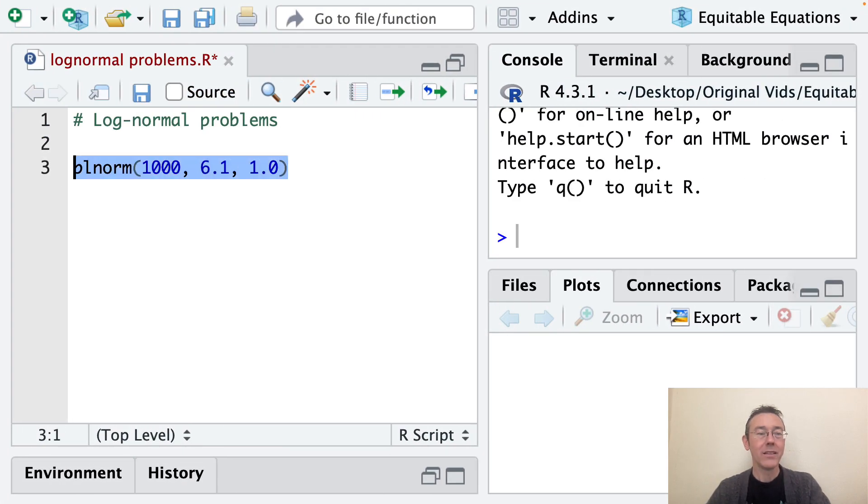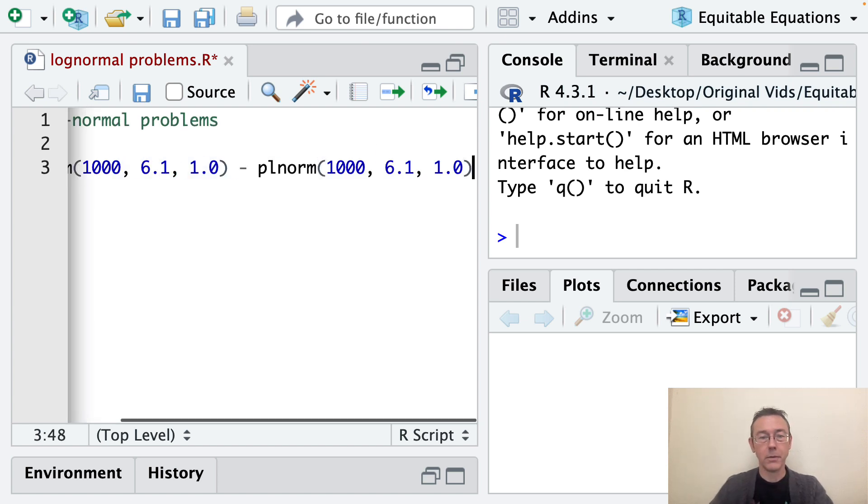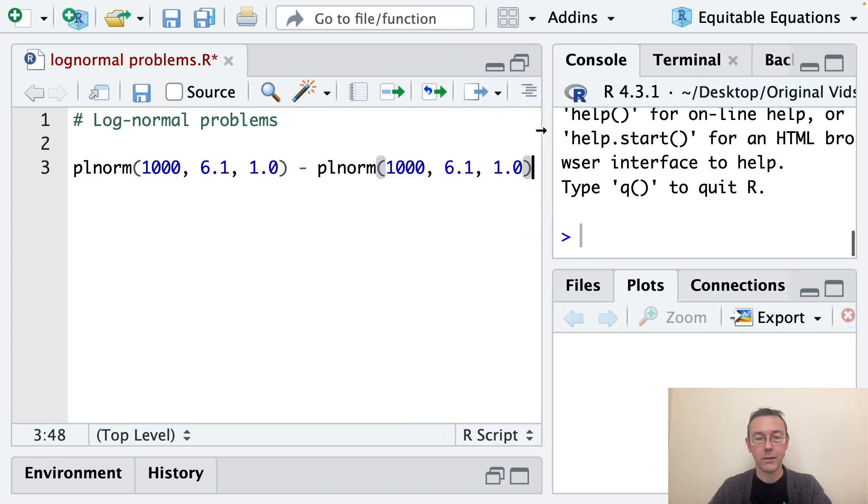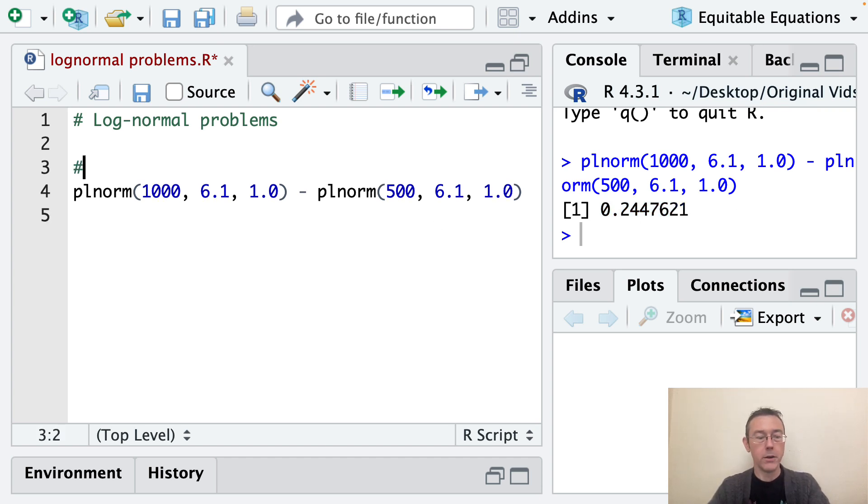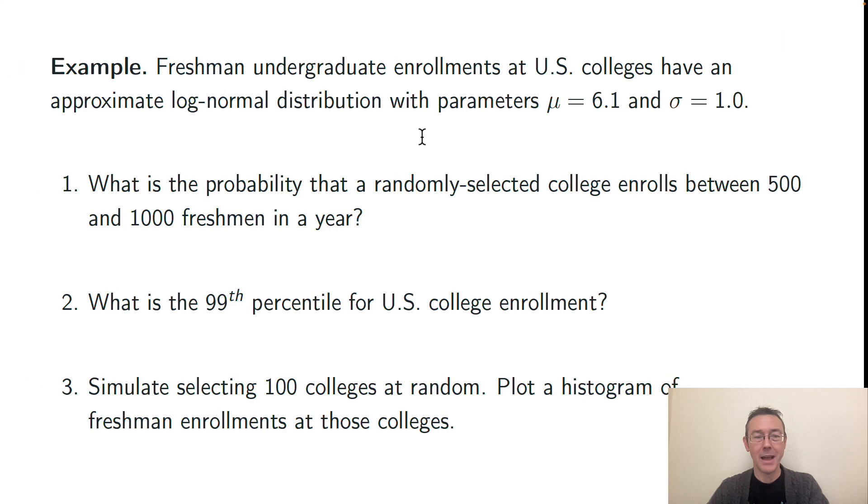And then I'm going to want to subtract off the plnorm of the smaller value, so that was 500. And I get a probability of a little more than 24%. Just put in a note here that this is for problem one. And I'm about to do problem two, so I'll go ahead and put in that comment now.